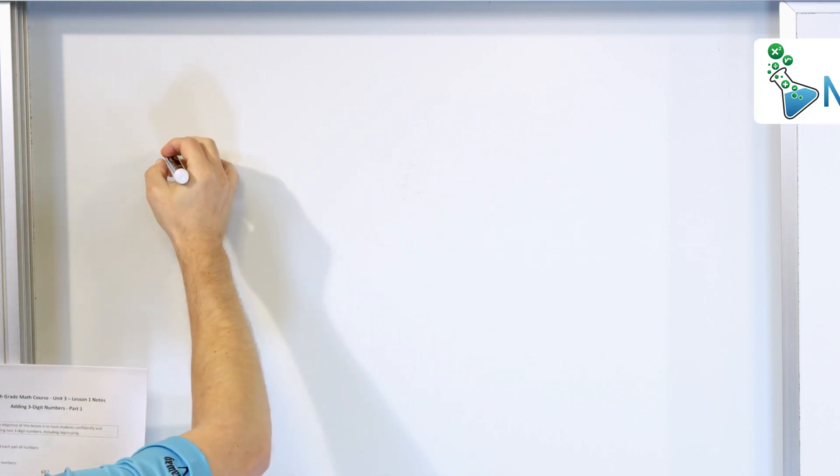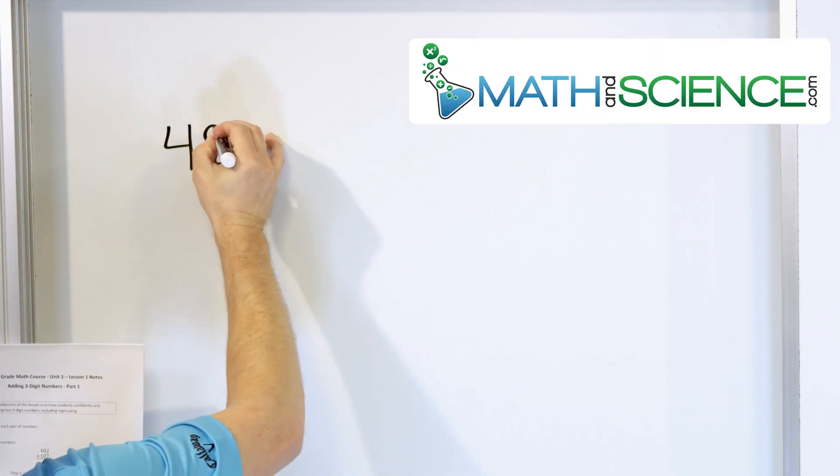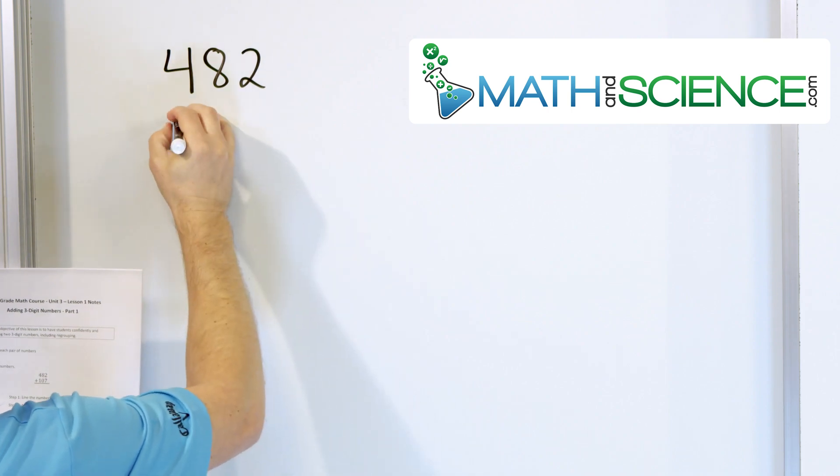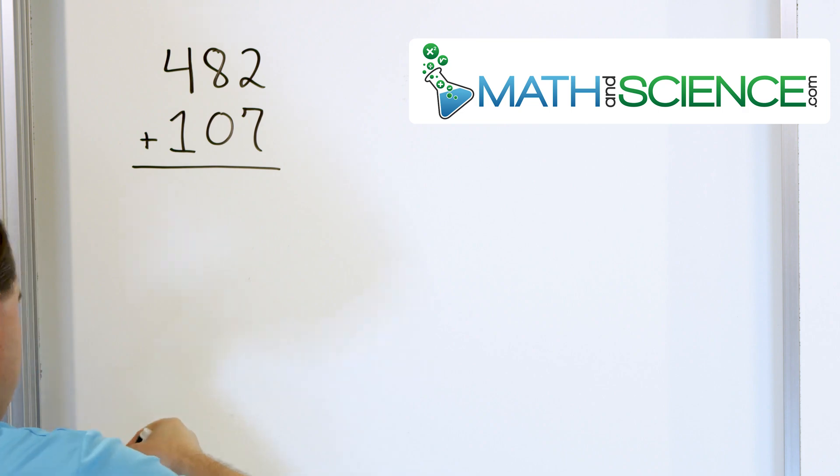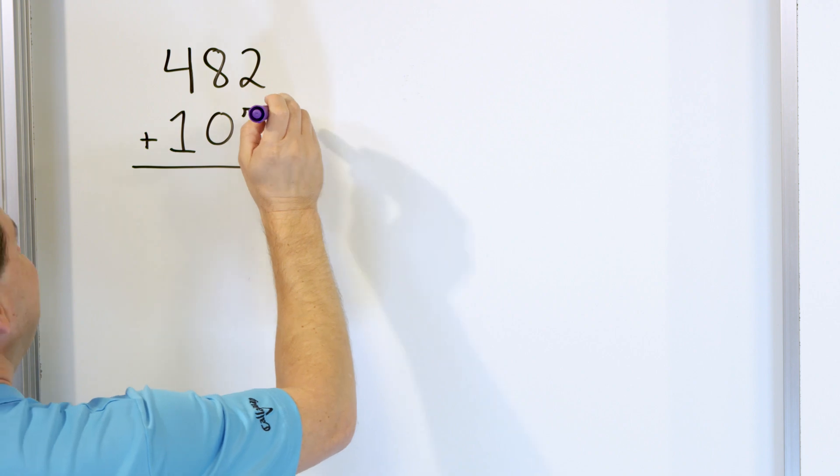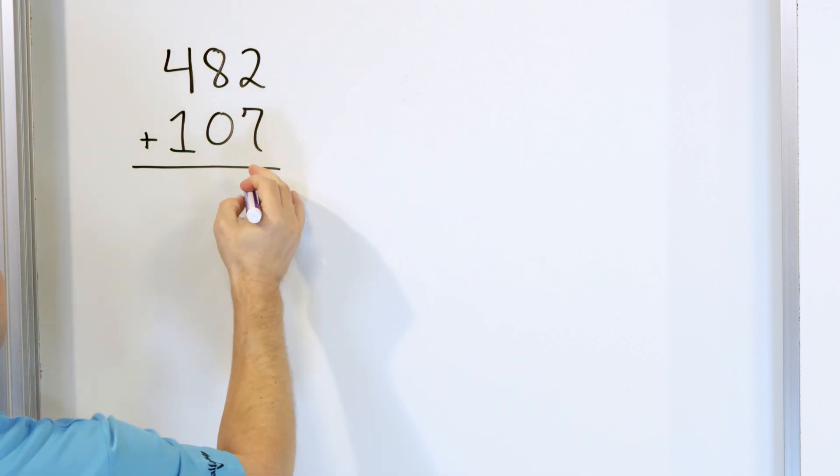Let's say that we're going to add the numbers 482, that's the first number, and we're going to add to it 107. So just like we always do, we start in the right-hand column. 7 going up 2 more is 8, 9. So 7 plus 2 is 9, 9 goes in the first position right there.